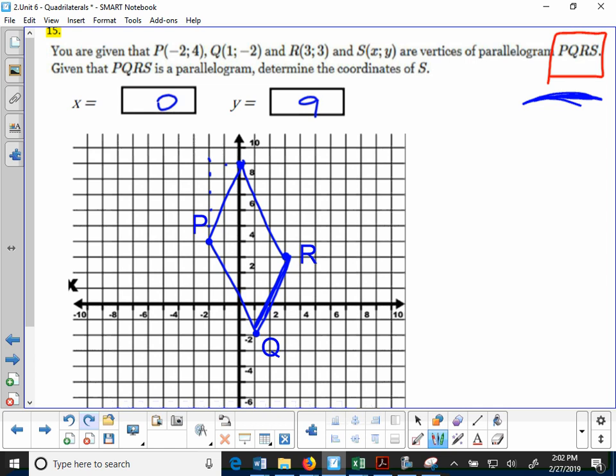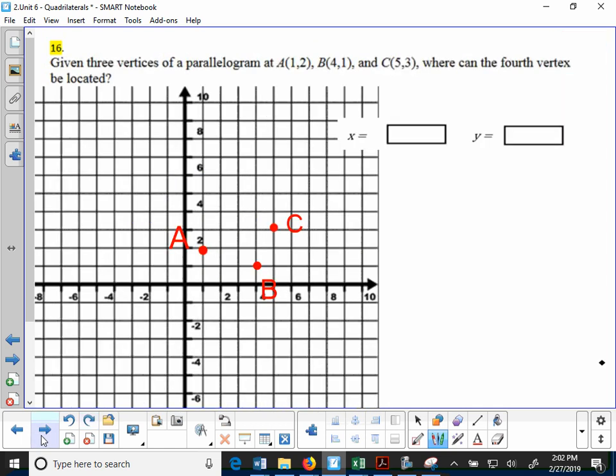But if we have a problem that looks like this, number 16, and it says, given three vertices of the parallelogram at A, B, and C, where can the fourth vertex be located? So for this one, it's not telling us parallelogram ABCD. So there is actually no particular order.